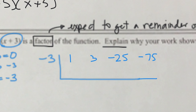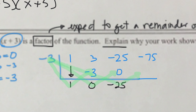Let's do the synthetic division. We drop down the 1. Negative 3 times 1 goes here — that's negative 3. Then we add: 3 minus 3 is 0. Multiply: negative 3 times 0 is 0. Add: negative 25 plus 0 is negative 25. Multiply that by negative 3: that's positive 75. And we get a 0 remainder.